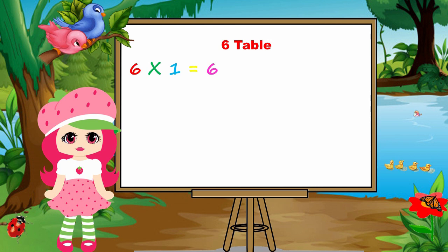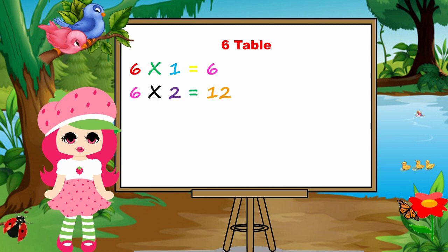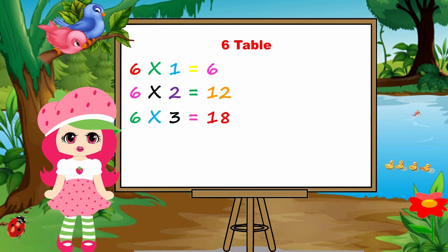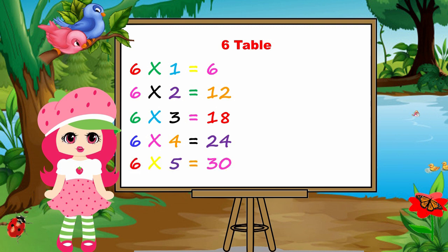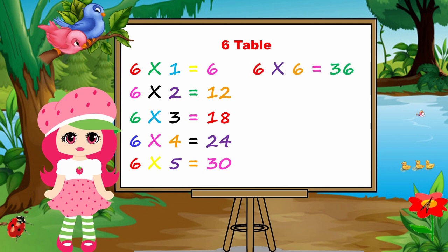Six ones are six. Six twos are twelve. Six threes are eighteen. Six fours are twenty-four. Six fives are thirty.